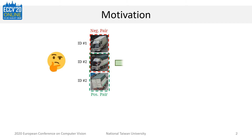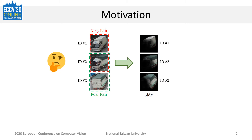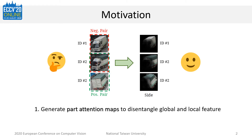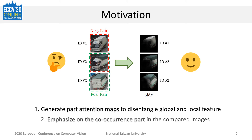In such cases, it would be hard to correctly classify them based on the whole image. But if we only focus on the vehicle parts that both appear in the compared image — which is the side view here — it would be much easier to classify them. This idea motivates us to design a framework which can generate part attention maps to disentangle part features from global ones, and emphasize on the co-occurrence vehicle parts in the compared image.